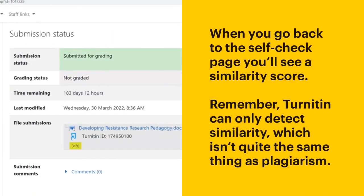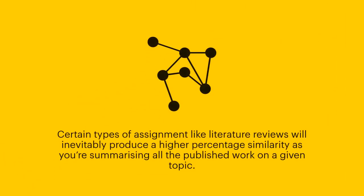When you go back to the Self Check page, you'll see a similarity score. Remember, Turnitin can only detect similarity, which isn't quite the same thing as plagiarism. Certain types of assignment, like literature reviews, will inevitably produce a higher percentage similarity as you're summarising all the published work on a given topic.